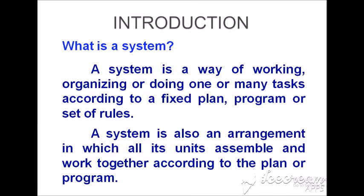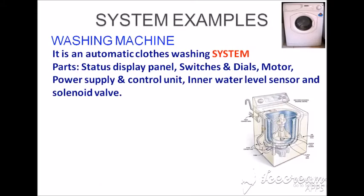The next example is a washing machine. You can see there are various purposes in the washing machine — a status display panel, switches, motor, power supply, inner water level sensor, and a solar network. All those things deal with electronics. A small embedded system circuit controls all of those — the panel switches, displays, and inputs are all controlled through a small controller.